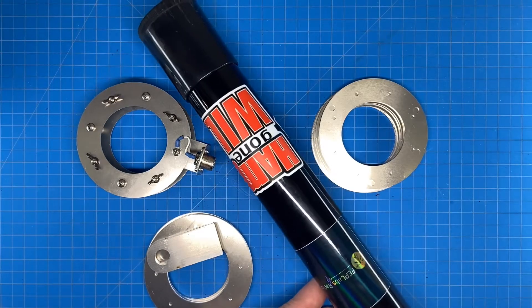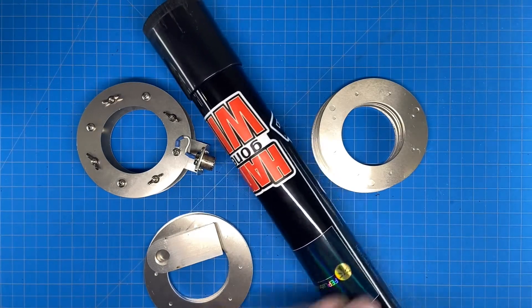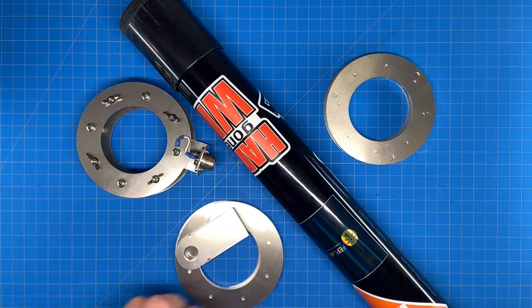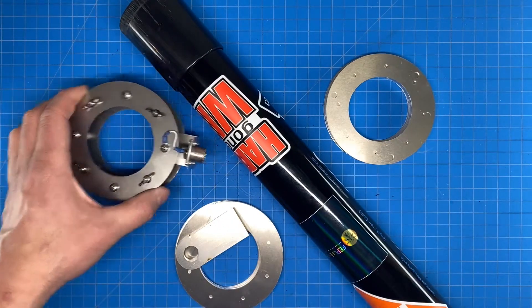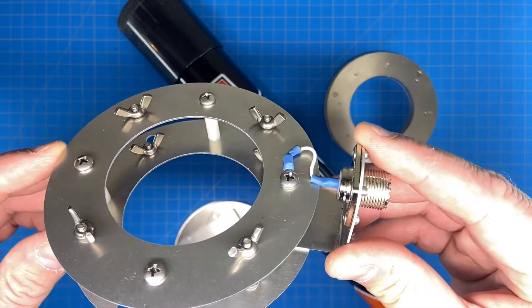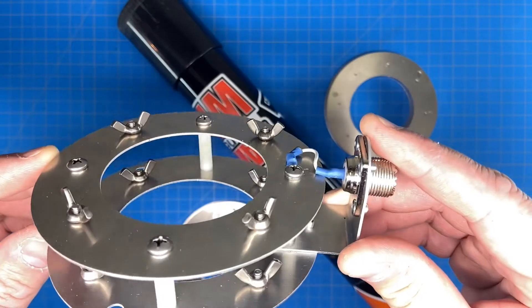So I took this 10 meter spider beam pole that I already had and I designed a quarter wave vertical antenna around it. Here's what I came up with. I had some parts produced by a water jet company.